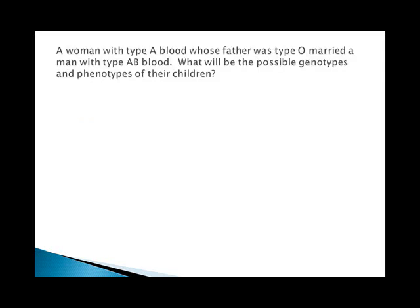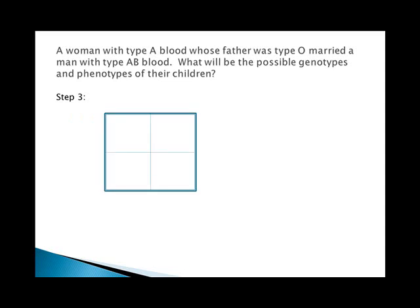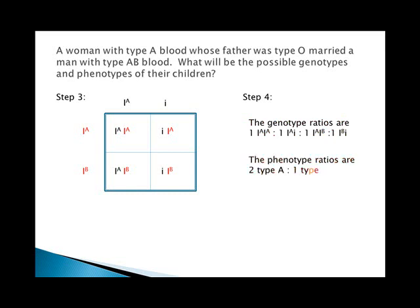Step three: set up the 2×2 Punnett square with mom across the top and dad on the side, bring column headings down, bring row headings across. The genotype ratios include I^A I^A, I^A I^B, I^A little i, and I^B little i. The phenotype ratios are two type A, one type AB, and one type B — notice there are no type O offspring.